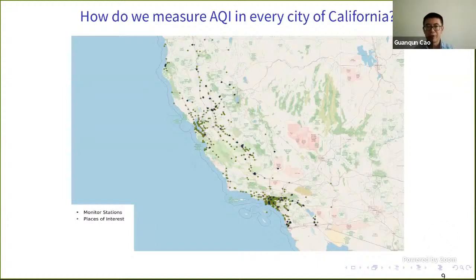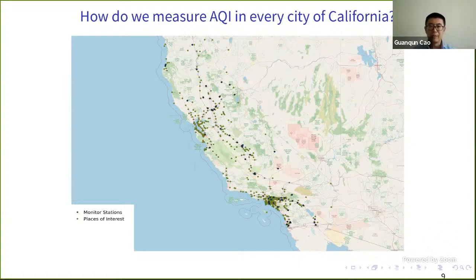Here comes the question: what happens if you want to measure the AQI in every city of California? We only have a limited number of stations, so we have to introduce more information and formulate a model. I can show all the places of interest in green and the limited number of monitoring stations colored in blue.